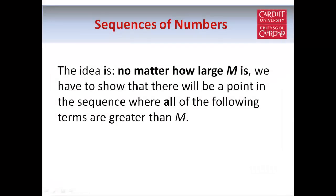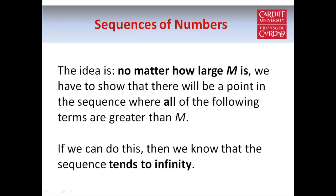To summarize: in order to show that a sequence tends to infinity, we have to show that no matter how large m is, there will be some point in the sequence where all of the following terms — not just some of them, but all of them — will be greater than m. And if we can do that, we know that the sequence tends to infinity.